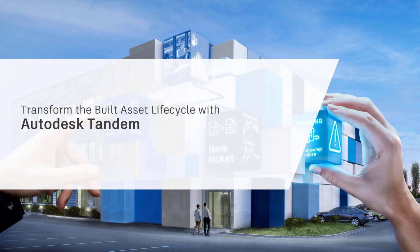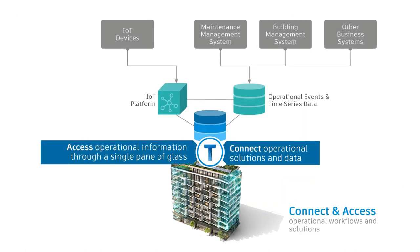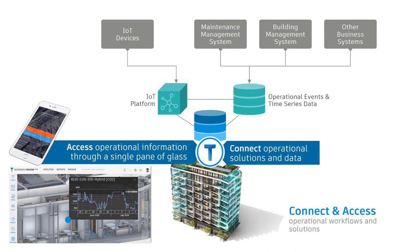Now let's take a quick look into the future at how Autodesk Tandem will transform the built asset lifecycle. Autodesk Tandem provides the context to connect operational data and systems. With these connections, you can answer and visualize complex questions like: if this component fails, what spaces are affected? Where are these assets and how do I access them? And how does the built asset perform against my desired outcomes? We'll create those connections by linking the assets, spaces, and systems in Tandem to operational systems and data. Autodesk Tandem can help accelerate operational readiness by using the asset and space data to initialize maintenance management, building management, IoT, and other systems. Through the connection to real-time and operational data, we plan to deliver a single pane of glass for monitoring and operating your facility. Note that we do not intend to build an IoT platform at Autodesk — our goal is to integrate with leading IoT platform providers such as Microsoft Azure and Amazon Web Services.